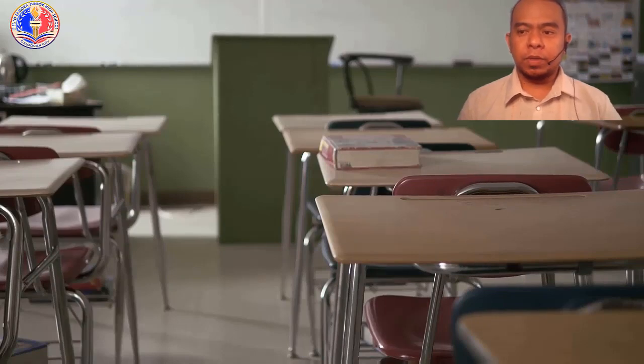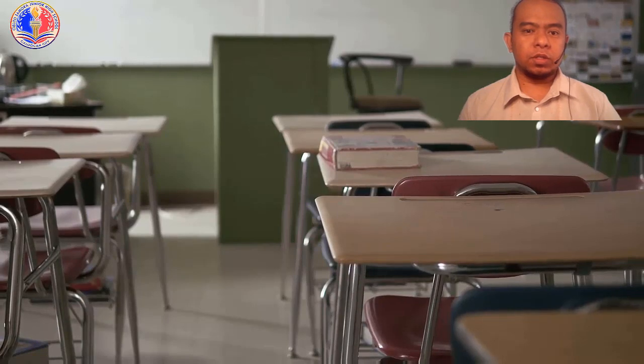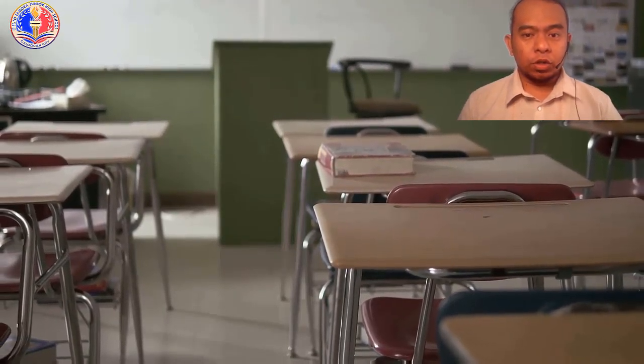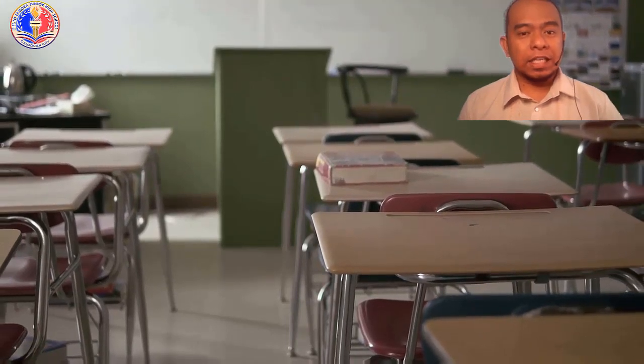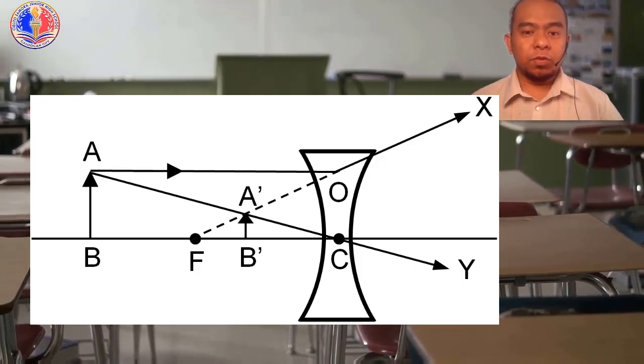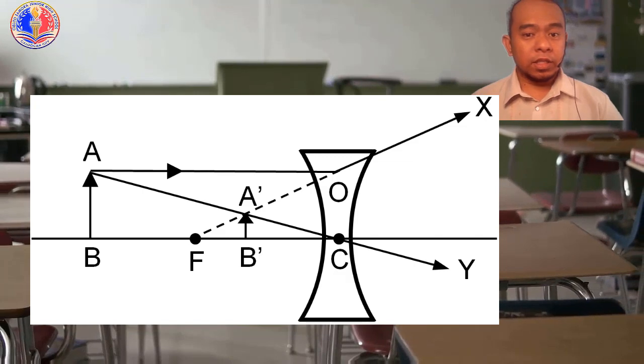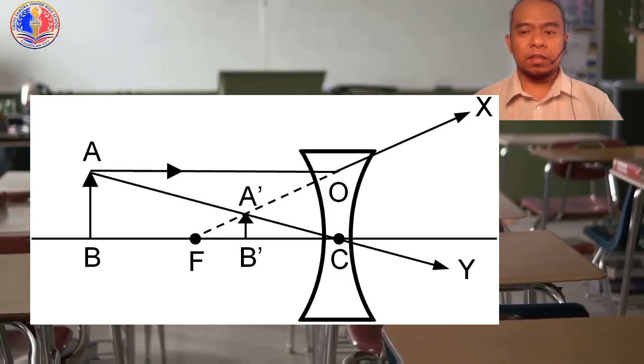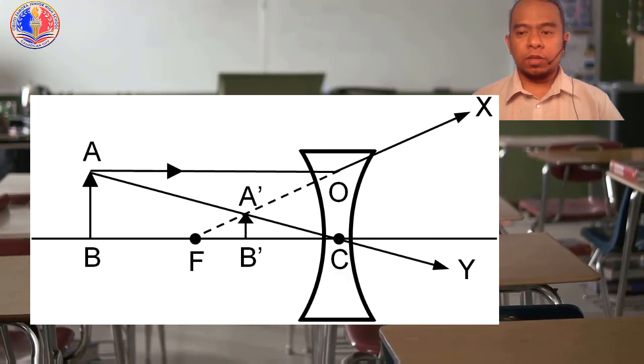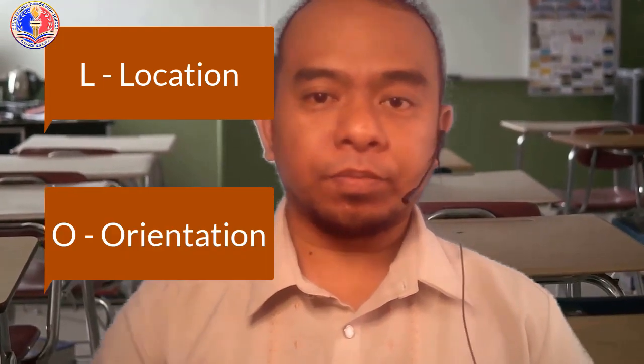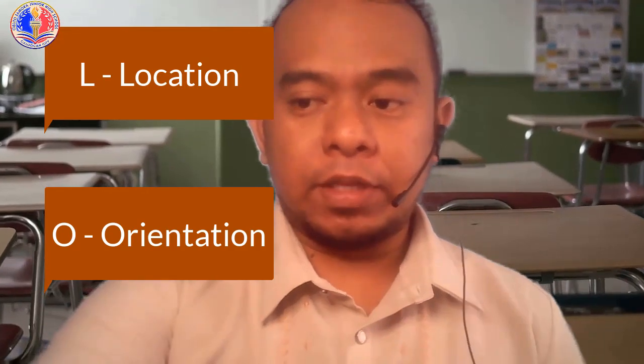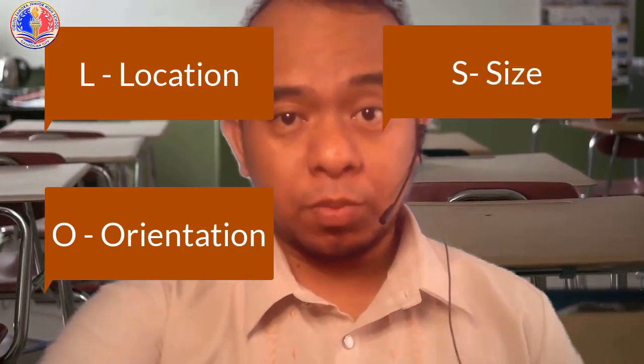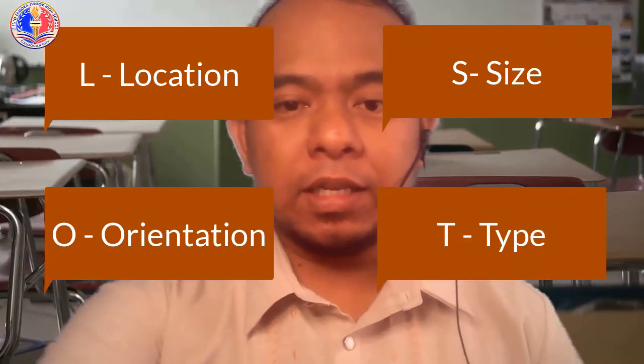The type of image formed by concave mirrors at different object positions. Let us talk first about concave mirrors. If the position of the object is at infinity, the image formed is at the focus. The size of the image is highly diminished, and the nature of image is real and inverted. In describing the image formed by concave mirrors and convex mirrors, we describe them by using the pattern LOST. L is for the location. O is for the orientation, whether it is upright or inverted. S is for size, bigger or smaller. And T is for type, real or virtual.